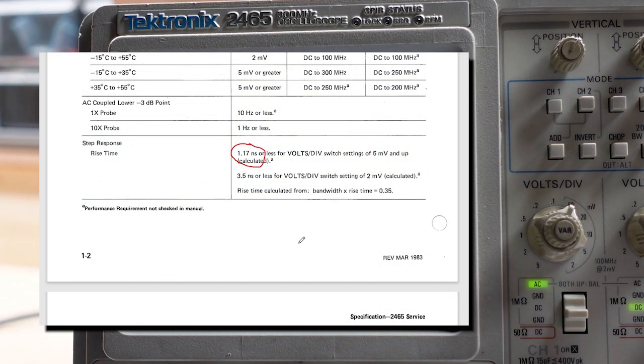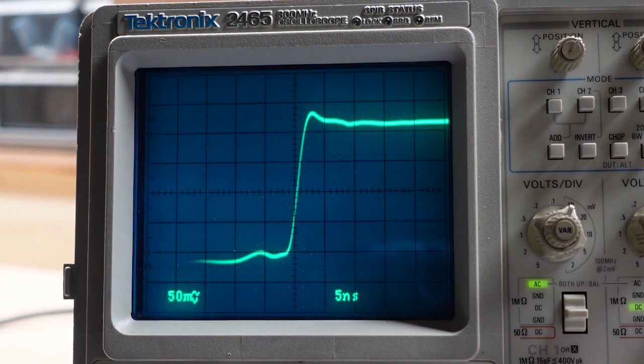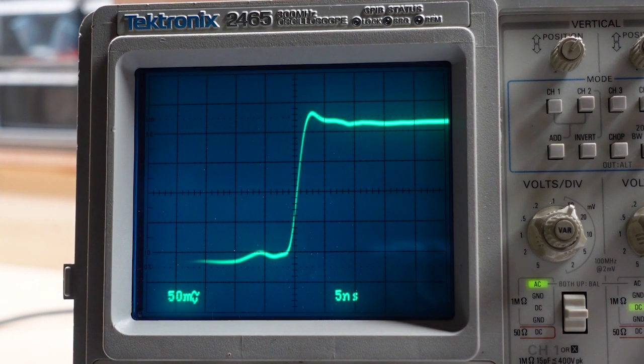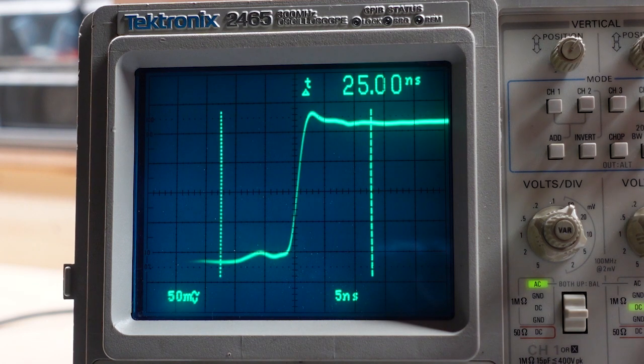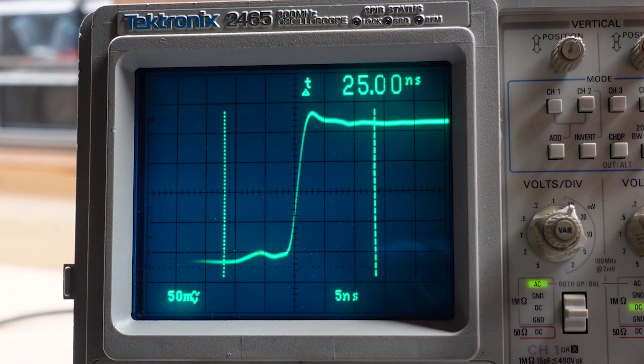And that's not a laboratory measurement. That's actually using the fairly common ratio of taking the bandwidth and 0.35, divide them by each other and you get 1.17 nanoseconds. So, nonetheless, I think the 2465's natural rise time is fast enough that we get a fairly decent measure of what the rise time of the 4505 is. So, let me turn on the time indicators and let's move them around and have a closer look here.